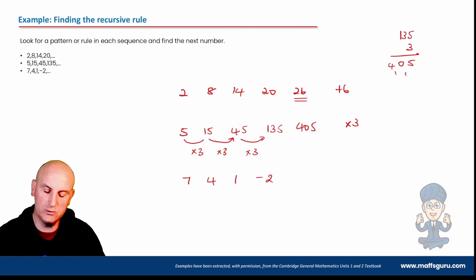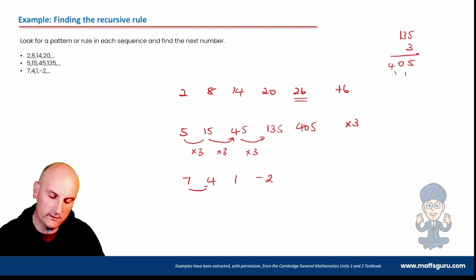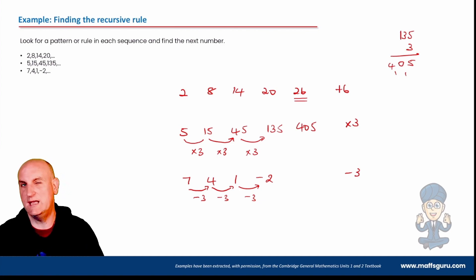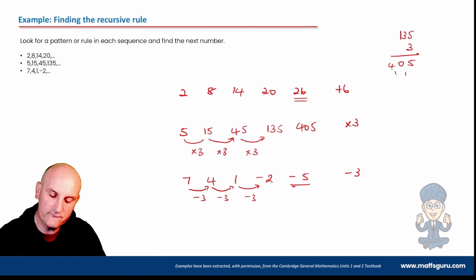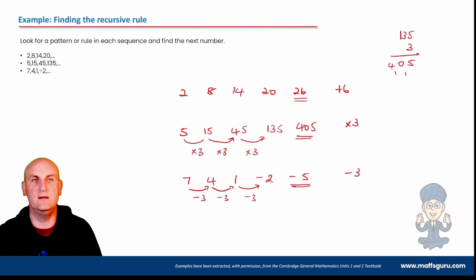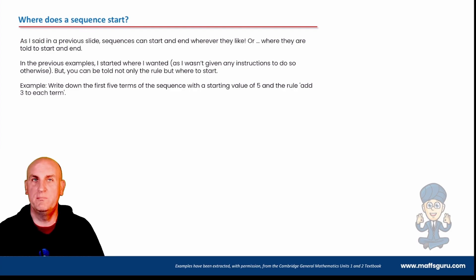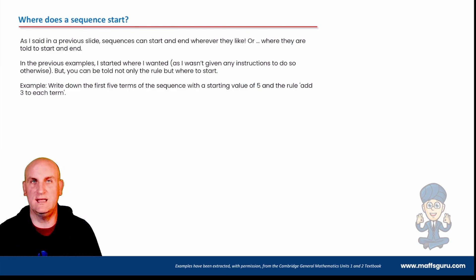What about 7, 4, 1, minus 2? It's not going to be a plus rule. Let's try a minus. From 7 to 4, I take away 3. Take away 3: do I get to 1? I do. Take away 3: do I get to minus 2? I do. So that's minus 3. My next number is minus 2 take away 3, which gives me minus 5. Being able to find the recursive rule is really, really important. Sequences don't really have a start — they extend to the left and to the right.